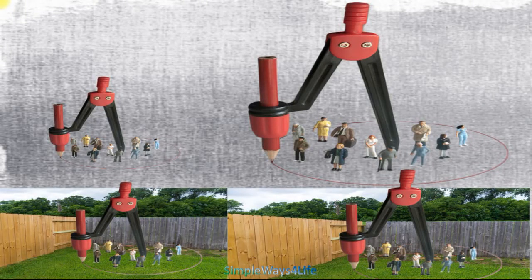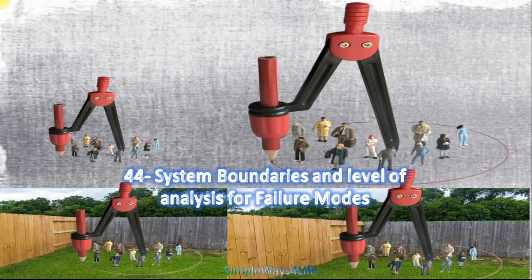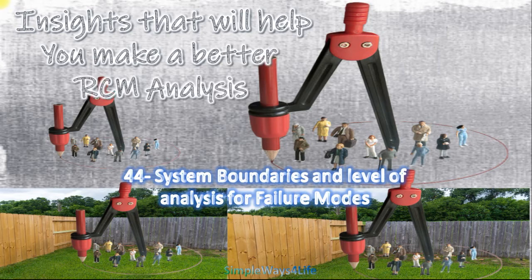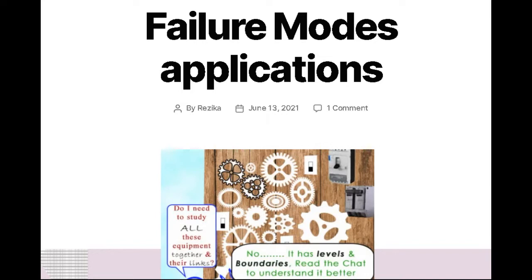We elaborated on what failure modes are and what we mean by them. Modes mainly means the causes of failure — we have many causes for one failure. The word 'mode' means how the failure occurs. After that, we need to make examples of putting failure modes into a table, but before that, today we are going to speak about how to set the boundaries of the system in which I'm going to record the failure modes.